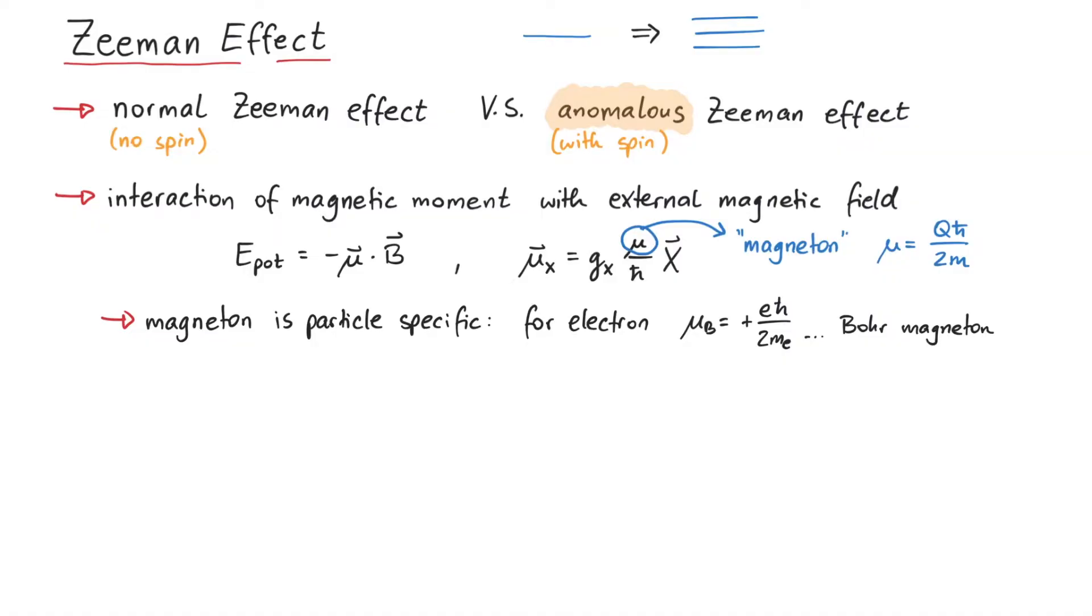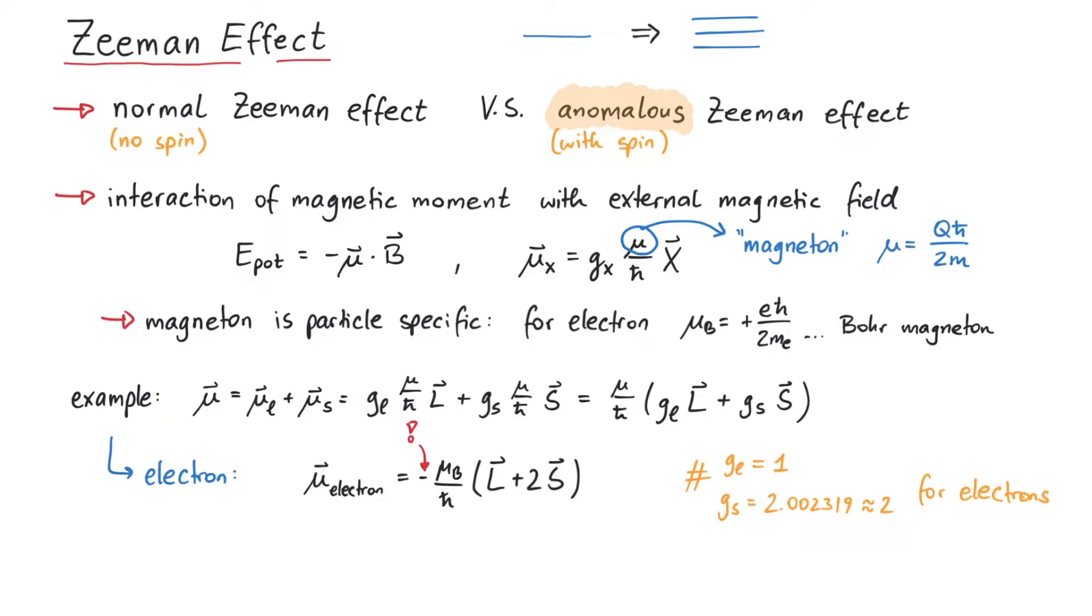If we now, for example, consider orbital angular momentum and spin, the magnetic moment would look like this. Moreover, if we consider a specific particle, like the electron, we can use electron-specific values for gl and gs, as well as the Bohr magneton.